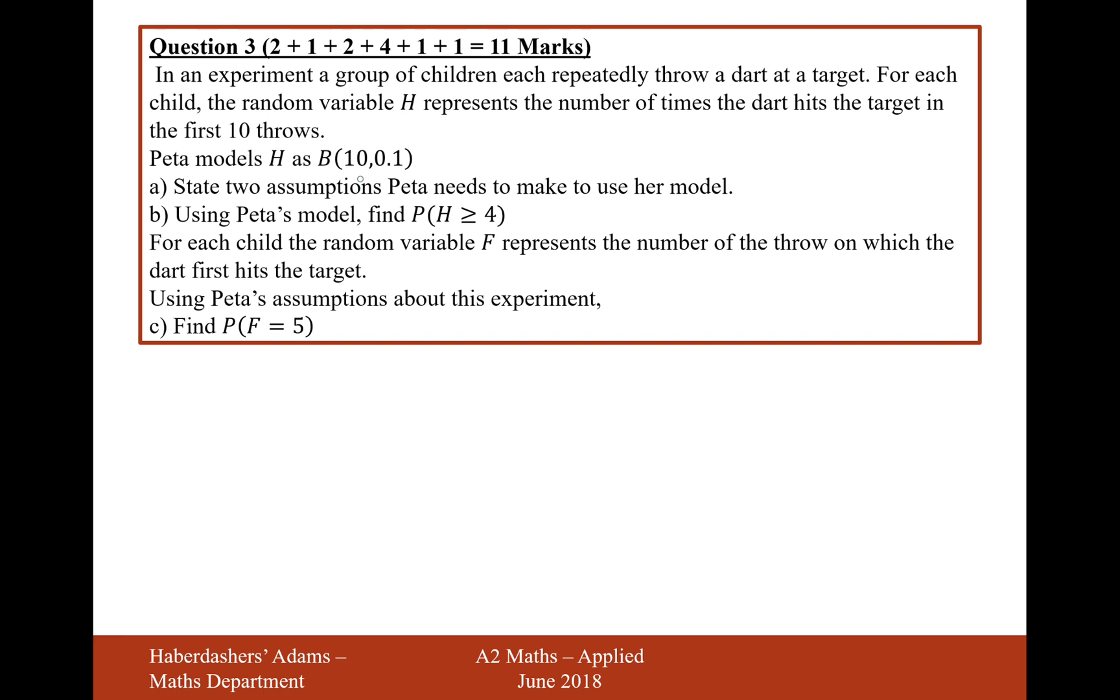Peter models H as a binomial distribution with 10 trials and a probability of success of 0.1, so 10%. It states two assumptions Peter needs to make to use her model. Well, I'm going to read out what it says in the mark scheme here. So it says the probability of a dart hitting the target is constant. So they're not moving around, they're just in the same place.